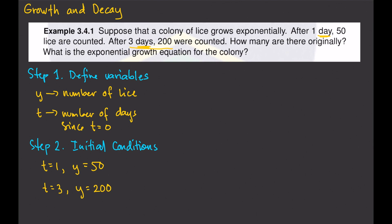Step 3 is to write our general solution: y equals c times a to the power of t. In other references this might look different, but they'll give you the same results. So y equals c times a to the power of t. Here y and t are our variables, and c and a will be our parameters.